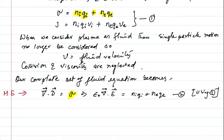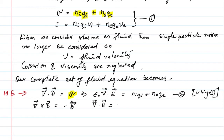Again, from Maxwell's equations, we have curl of E equal to minus del B by del T. And also, divergence of B is equal to zero.